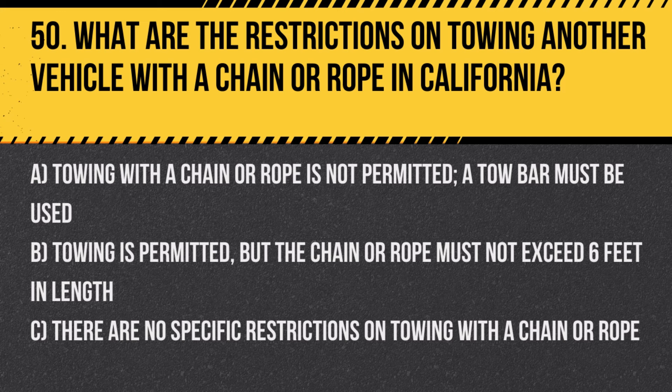Question 50: What are the restrictions on towing another vehicle with a chain or rope in California? A. Towing with a chain or rope is not permitted; a tow bar must be used. B. Towing is permitted, but the chain or rope must not exceed 6 feet in length. C. There are no specific restrictions on towing with a chain or rope. Answer: A. Towing with a chain or rope is not permitted; a tow bar must be used. This rule ensures safety by preventing unpredictable movements and accidents.